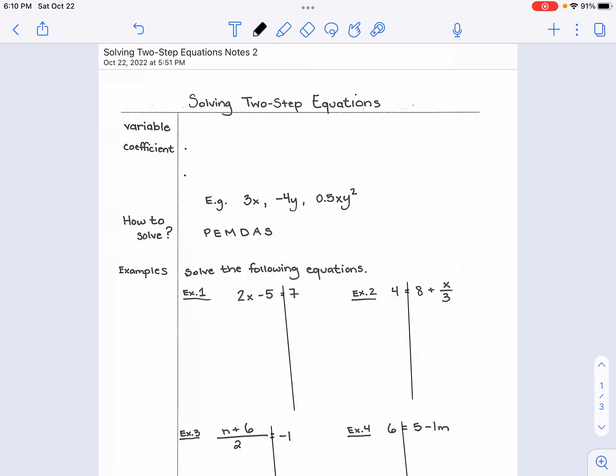Let's go to our first vocab term: variable. We already know what this is, we have referred to this before. But a variable is just a symbol. Now the symbol that we typically use are letters, but a symbol that represents a number or a value.